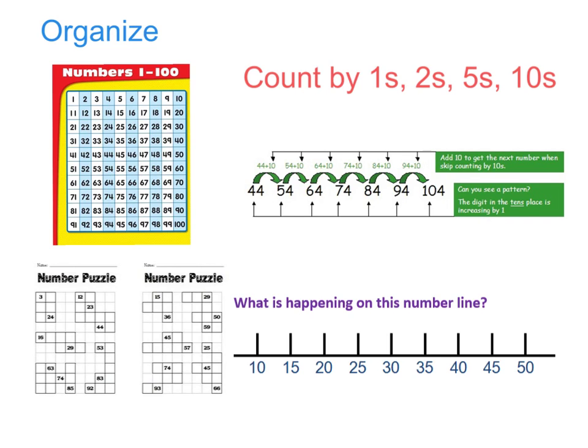We'll also be looking at a bunch of different number lines. Here's a number line here, where students are going to have to figure out what's happening in the number lines, counting by fives. We'll look at clocks. That's a type of number line. Thermometers, rulers. All of those are different types of number lines where we organize numbers.